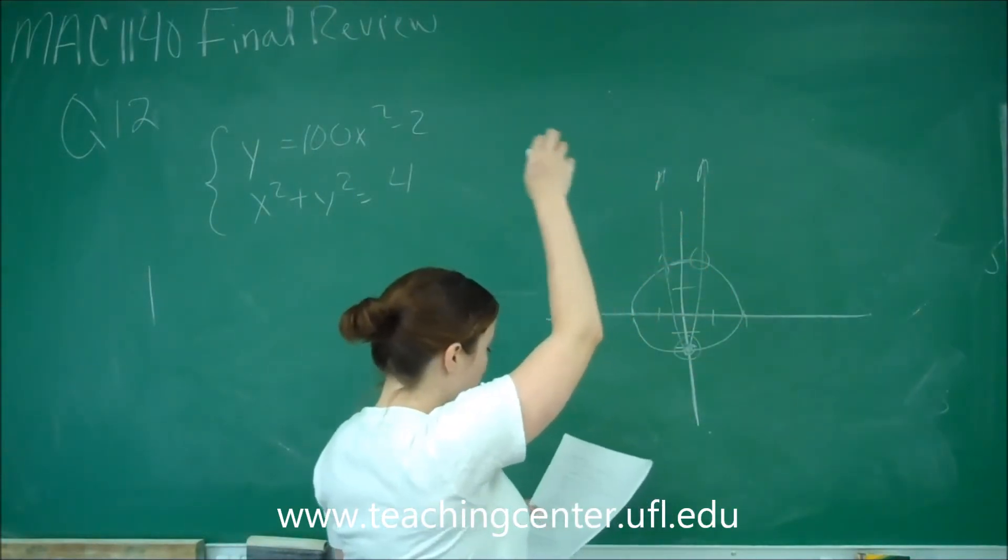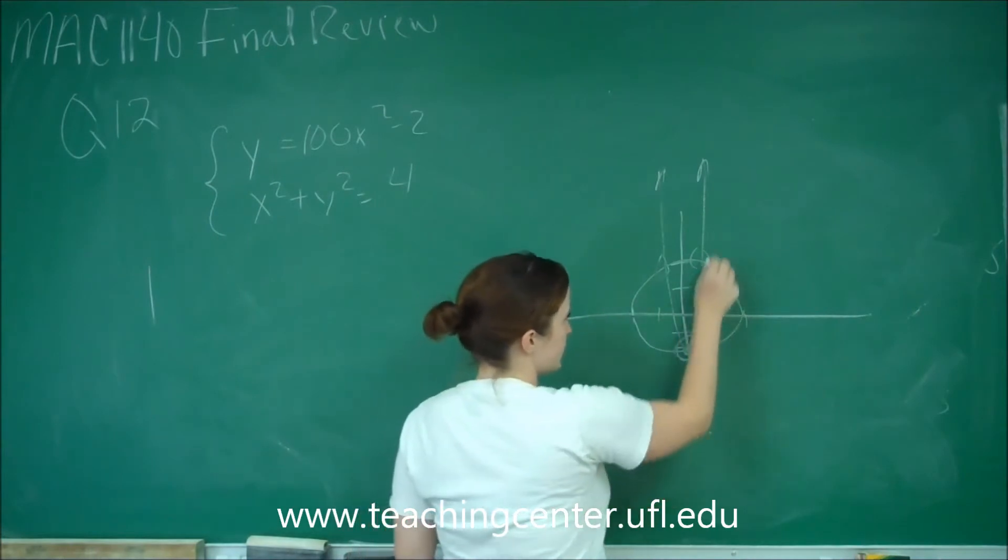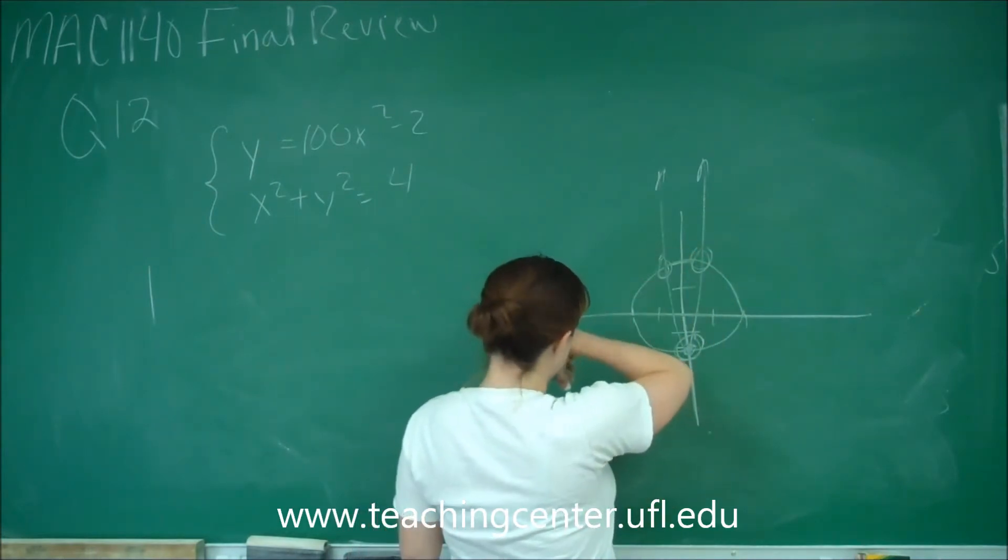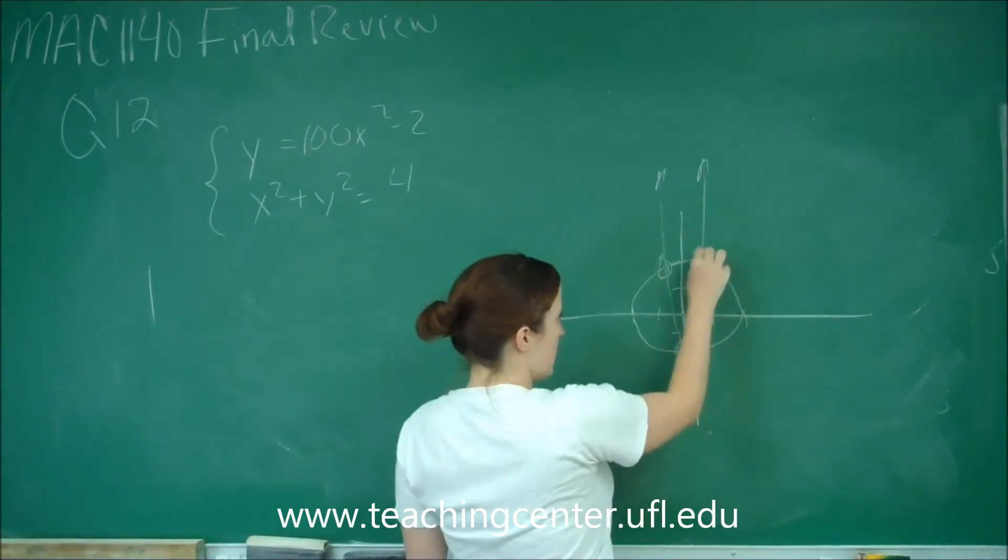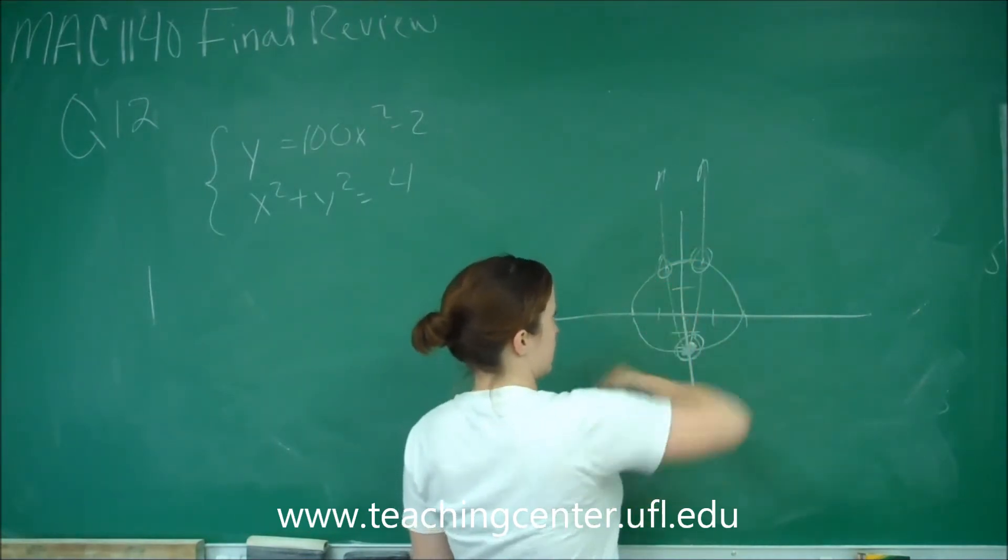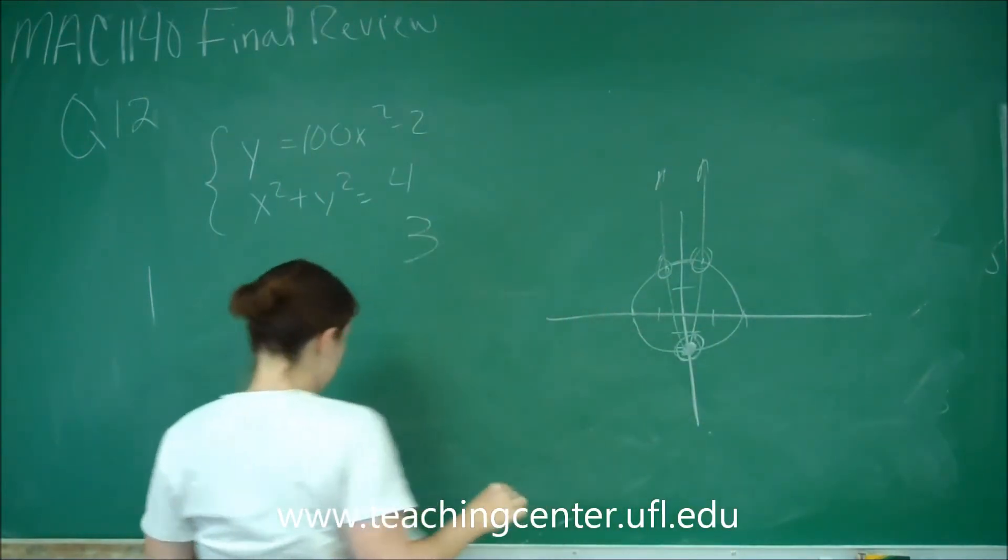And I want to know how many solutions does it have. So I just circled the solutions. Solutions are where the graphs intersect. They intersect here at this value of negative 2, but also this place here when our parabola crosses through that circle. So the answer is 3 solutions.